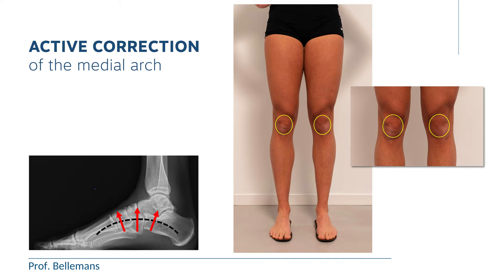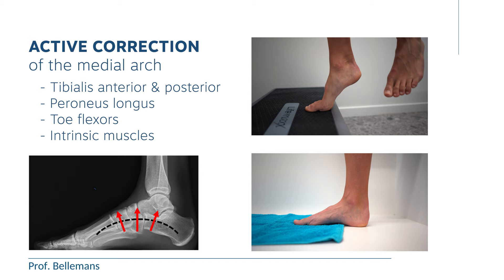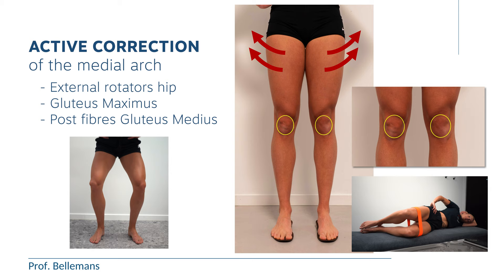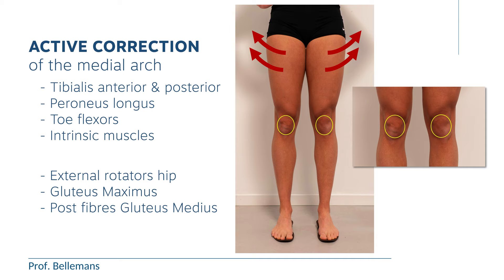Even better is to try to obtain active correction by strengthening exercises of the foot muscles that support and improve the medial arch of the foot. These muscles are the tibialis anterior and posterior, the peroneus longus, the toe flexors, and the intrinsic muscles of the foot. Also strengthening the external rotator muscles at the level of the hip will further help. That includes the gluteus maximus and the posterior fibers of the gluteus medius. If you achieve this, you not only get the passive correction by the insoles but also the active correction from the better muscle tone.